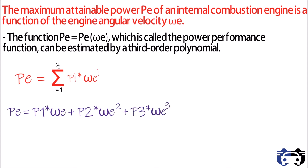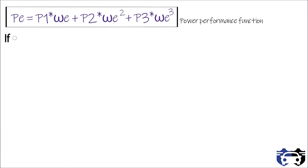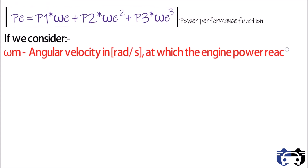This power performance function is a third order polynomial and can be used for comparing different engines at different power levels and angular velocities. If we consider omega m as the angular velocity in radians per second at which the engine power reaches its maximum value pm,